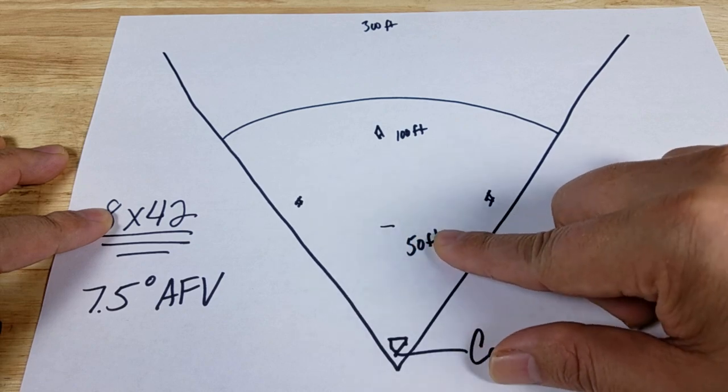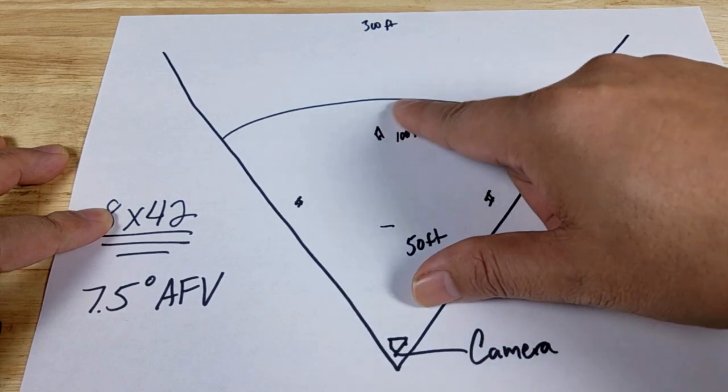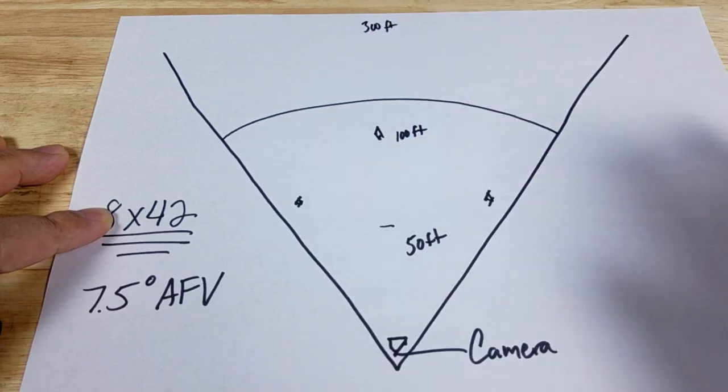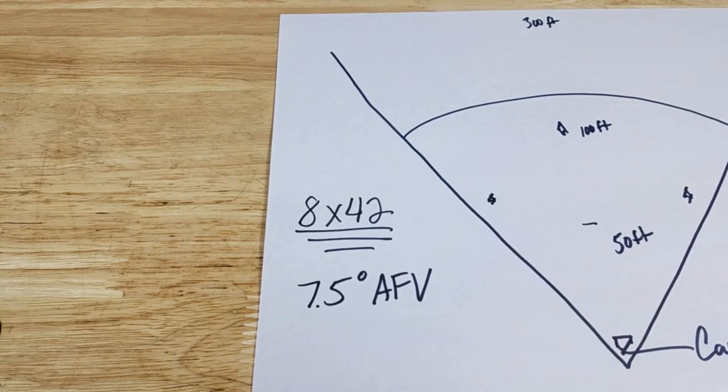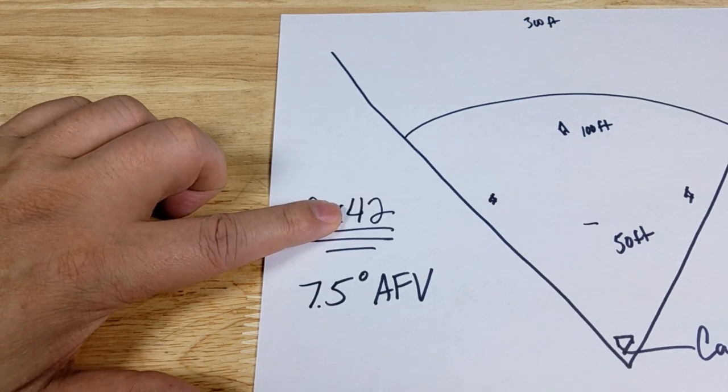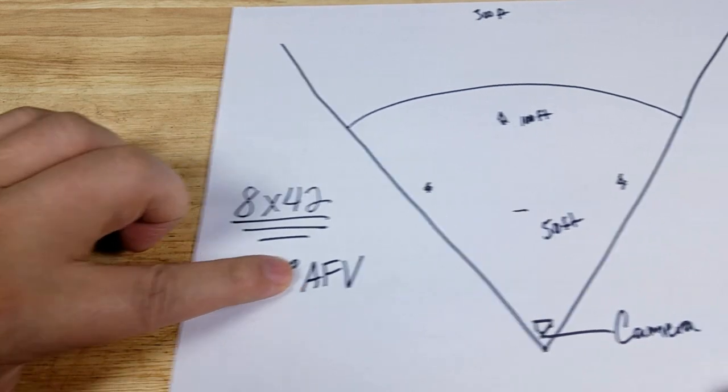The first target is set on the pitcher's mound about 50 feet away, then at second base about 100 feet away, then way back in center field warning track about 300 feet away. Remember, the pair of binoculars we're using has 8x magnification and a 42 millimeter objective lens.